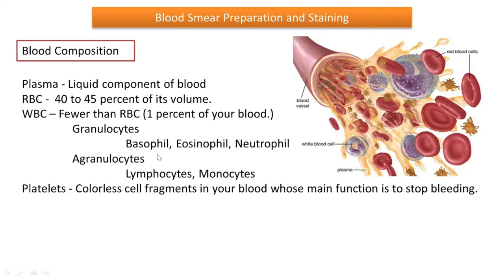For easy memorizing, we can use the code 'BEN' — B for basophil, E for eosinophil, and N for neutrophil. Then come agranulocytes — those WBC which are devoid of any granules in their cytoplasm; they are lymphocytes and monocytes. The last component present in the blood is platelets, which is a very important part of blood that helps in blood clotting. Without platelets, blood clotting will not happen whenever a wound occurs in our body.